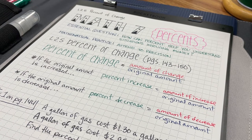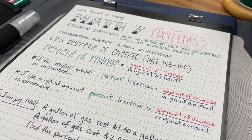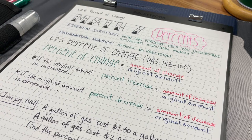So percent of change is going to be the ratio of the amount of the change from one time to another or from the original price to a discount divided by the original amount.